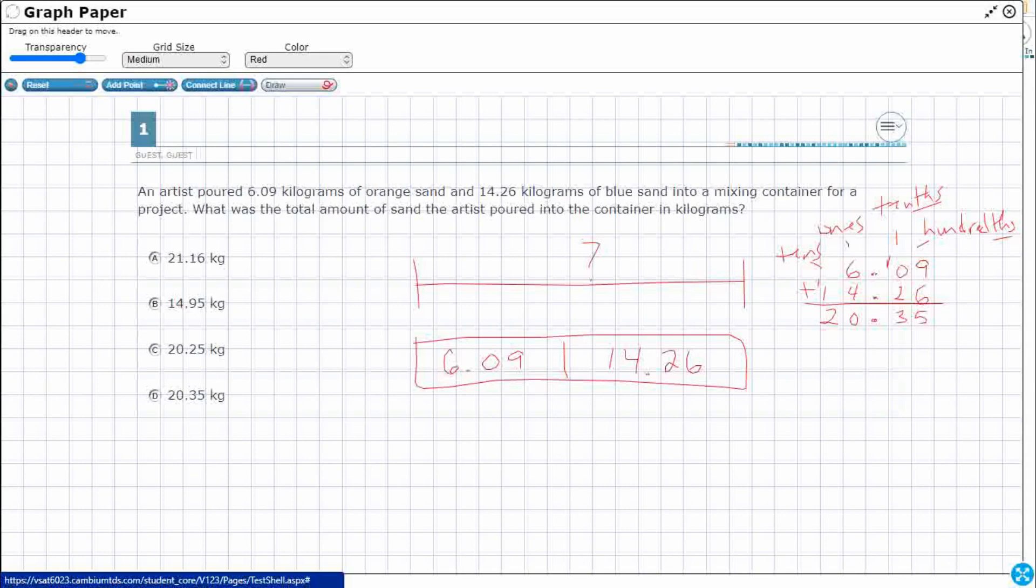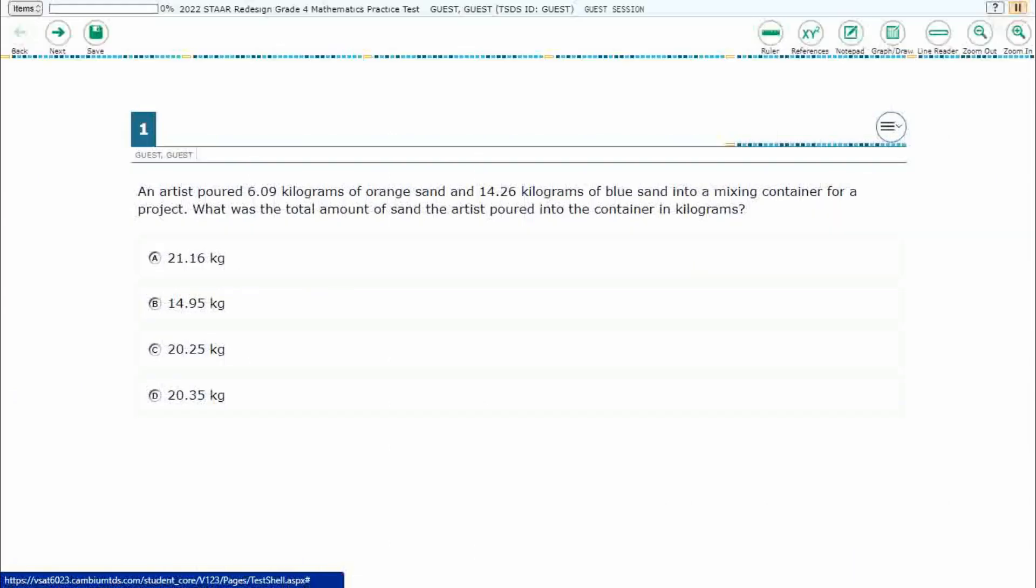If you're not sure, you could take your twenty and thirty-five hundredths, subtract one of those two, and see if you get the other one. That would work as well. Let's turn this off. And our answer here is D.